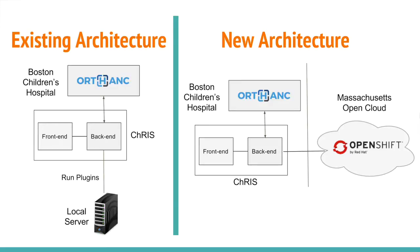In the new architecture, the backend would send a request to OpenShift and have a more powerful computer perform operations on the images. The results would then be sent back to the user.